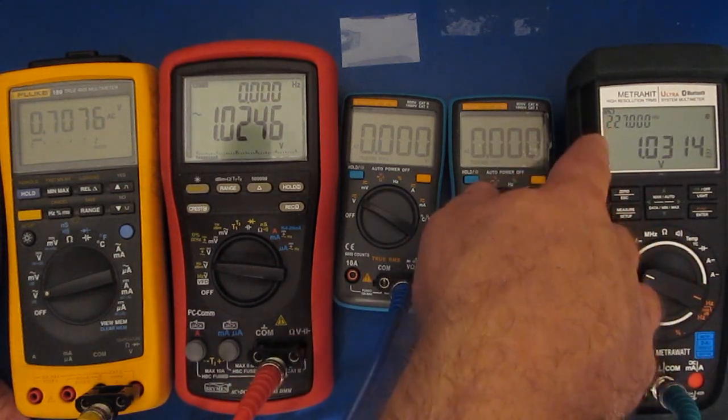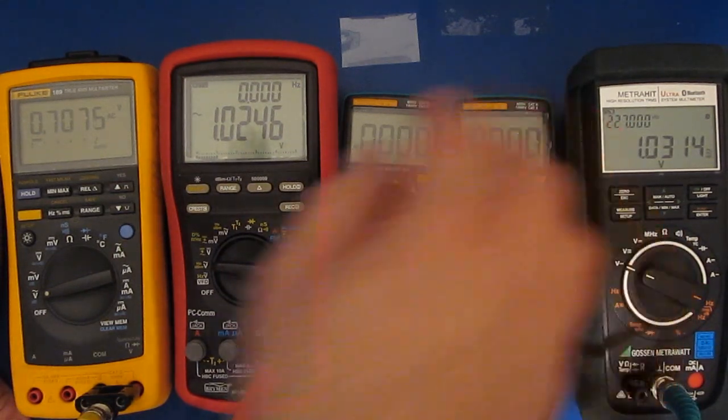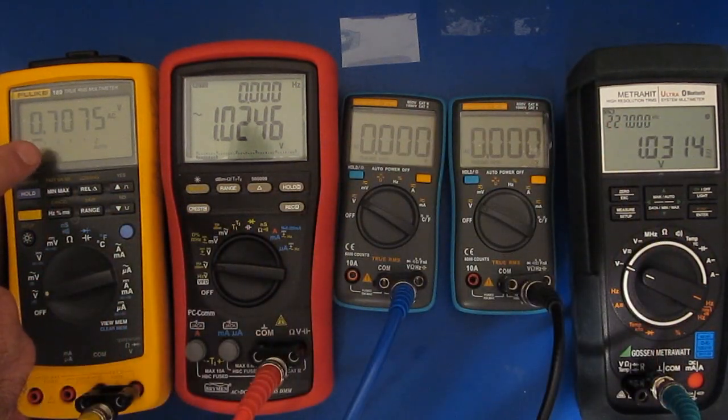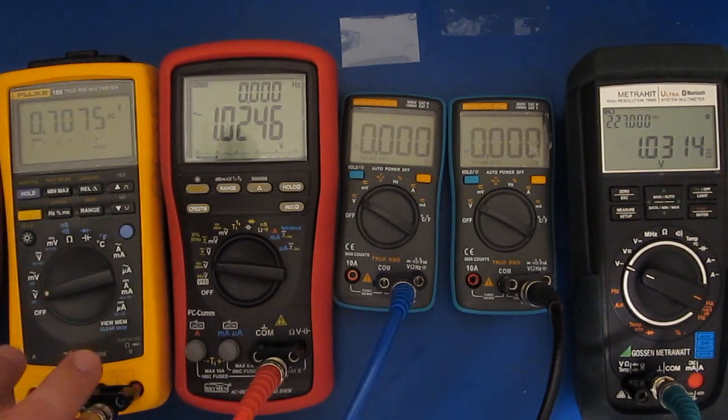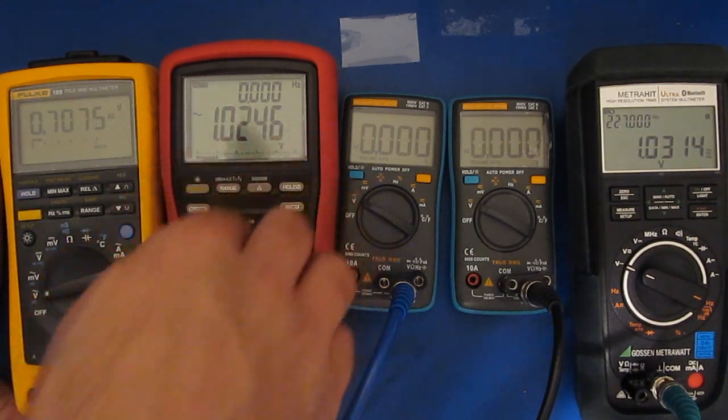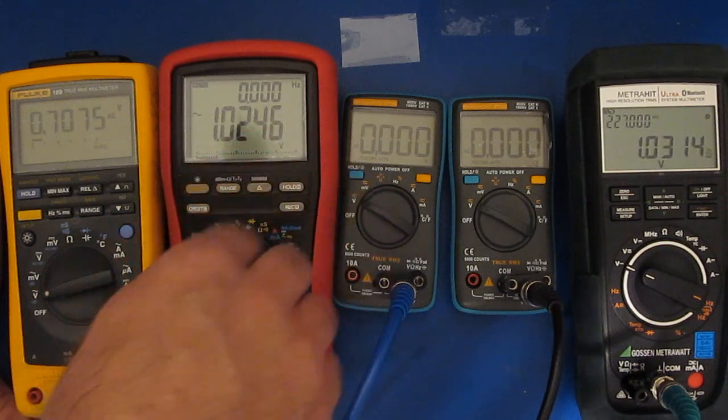You can see we're all the way up to 227 kilohertz right now and we've just hit the 3 dB point for the Fluke. The Brymen is still hanging in here. Of course it can't read frequency anymore.